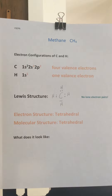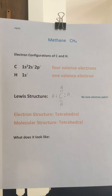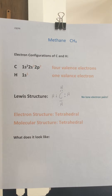We're going to start out by talking about the molecule methane, CH4. The electron configuration of carbon and hydrogen are shown right there. Carbon is 1s2, 2s2, 2p2 — four valence electrons. Hydrogen is 1s1, one valence electron. And of course, there are four hydrogens in methane.